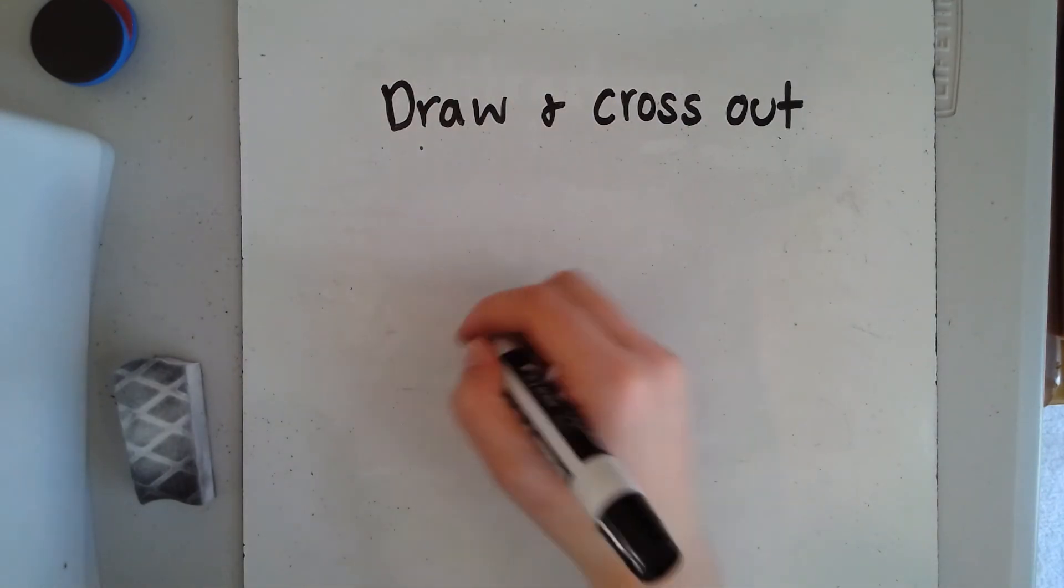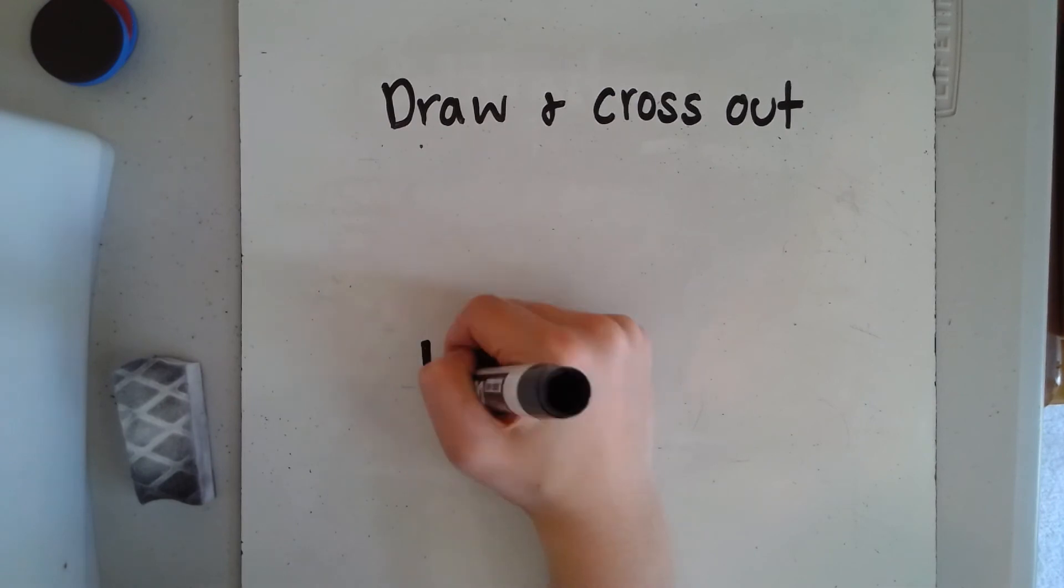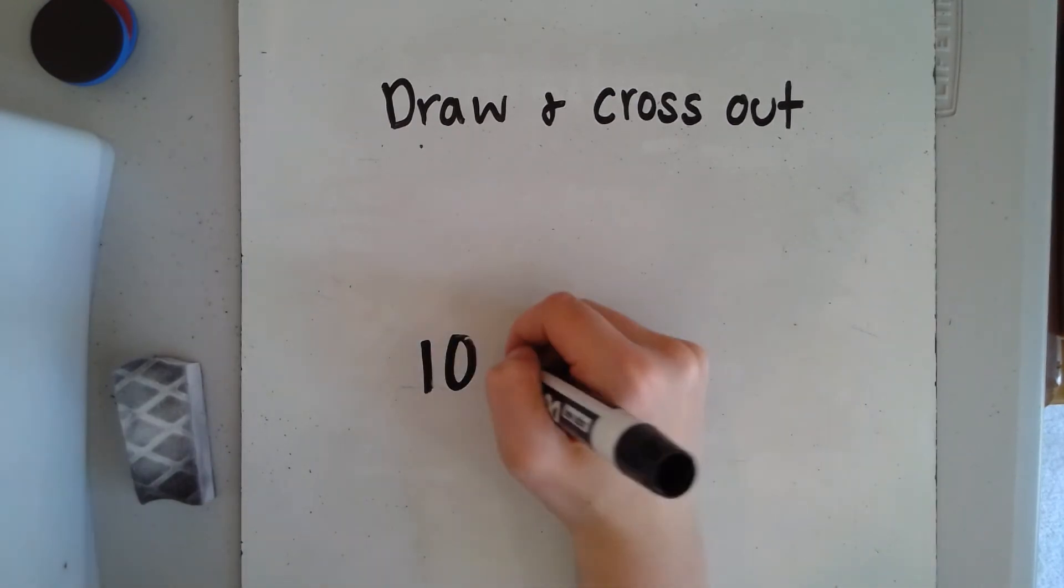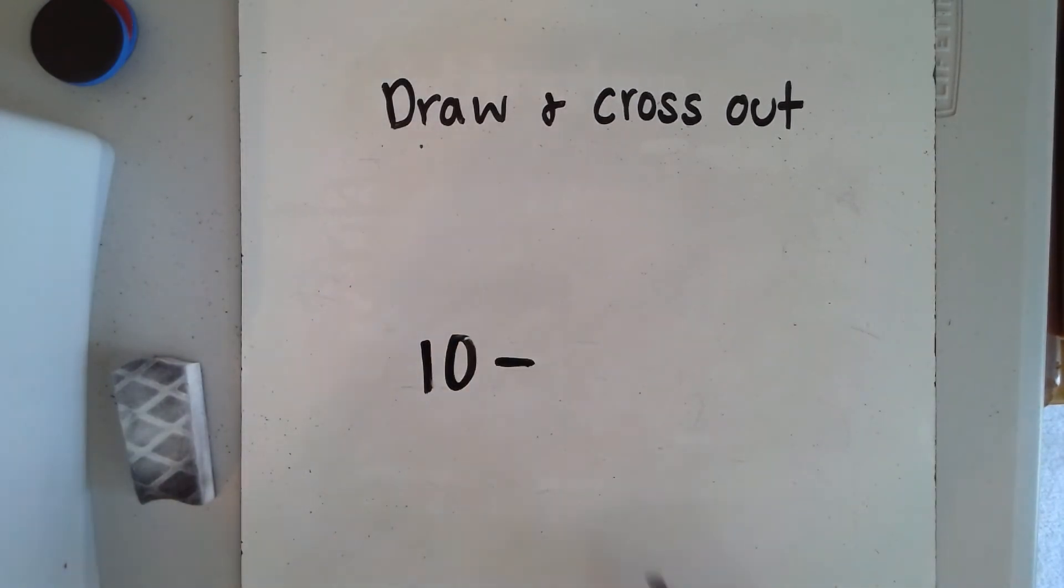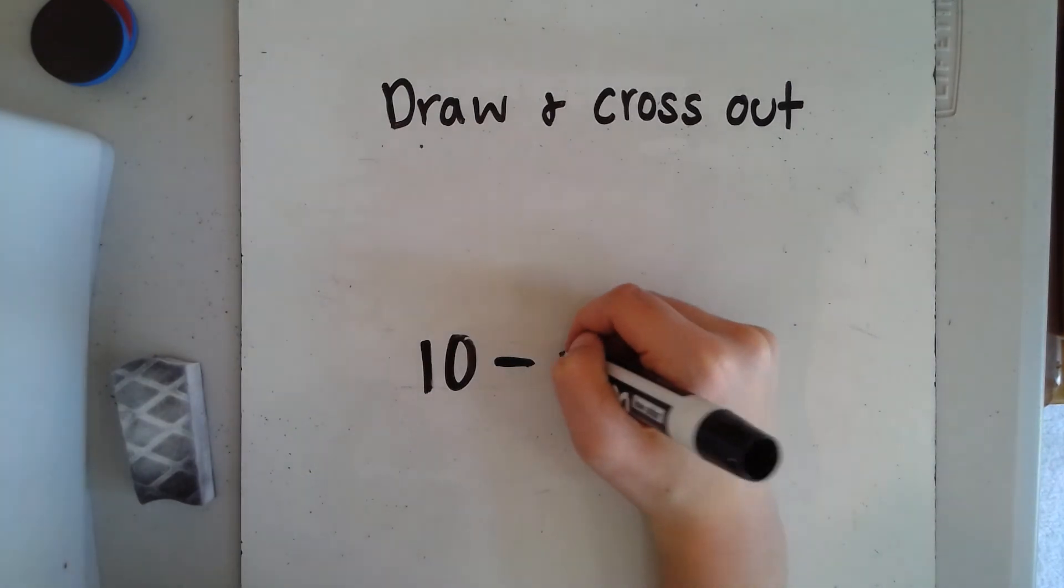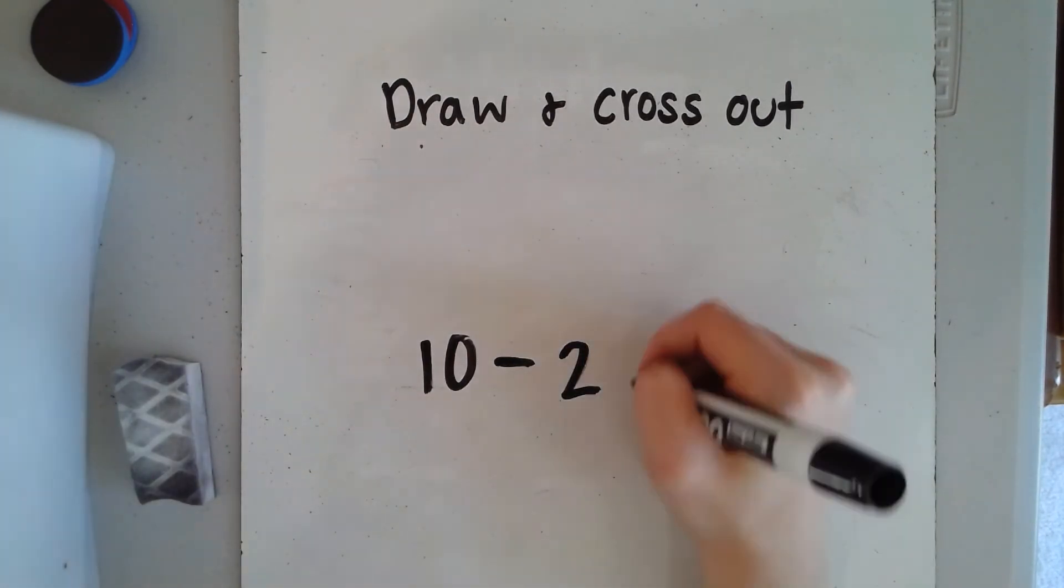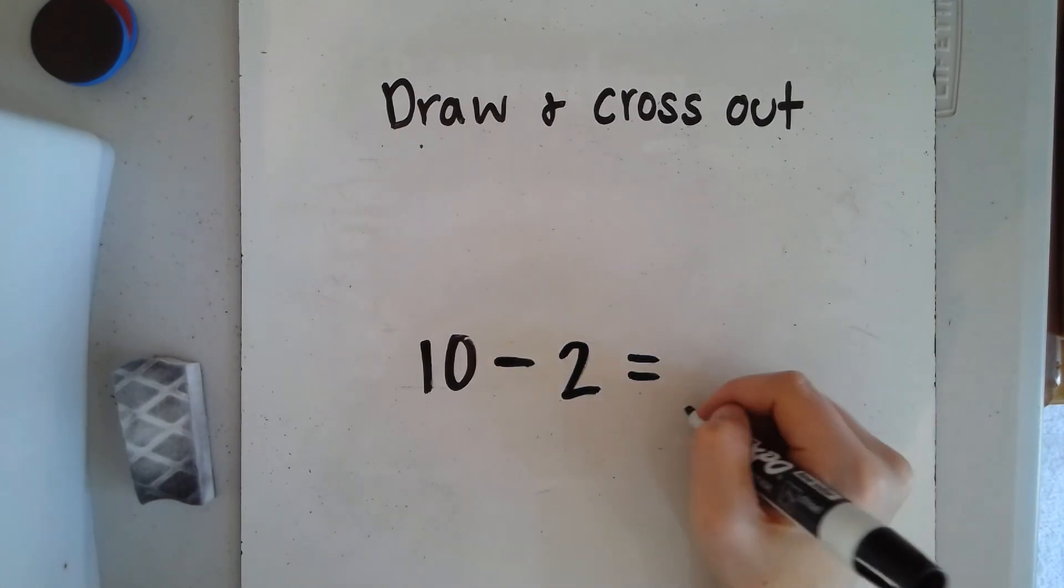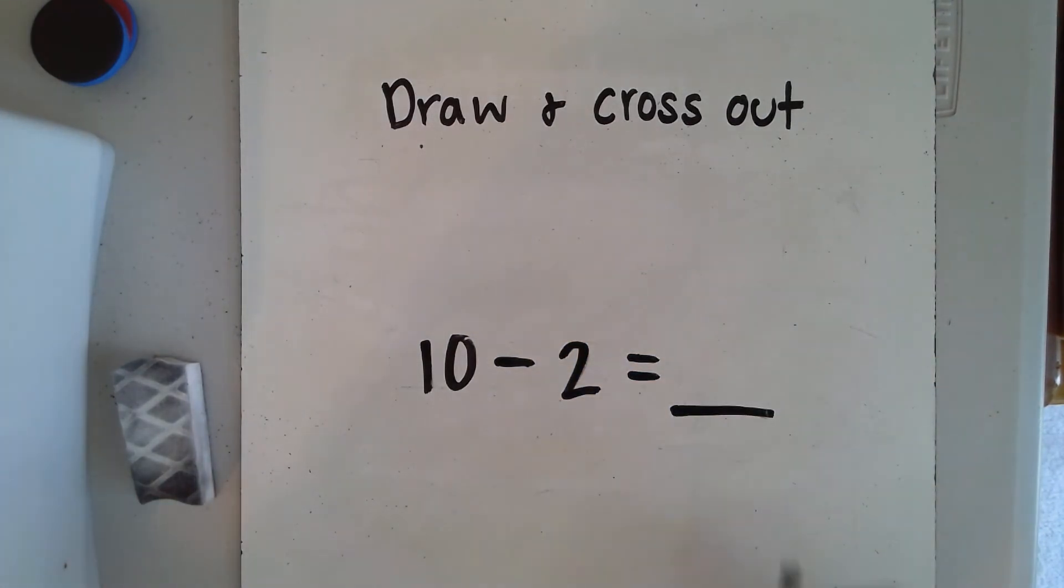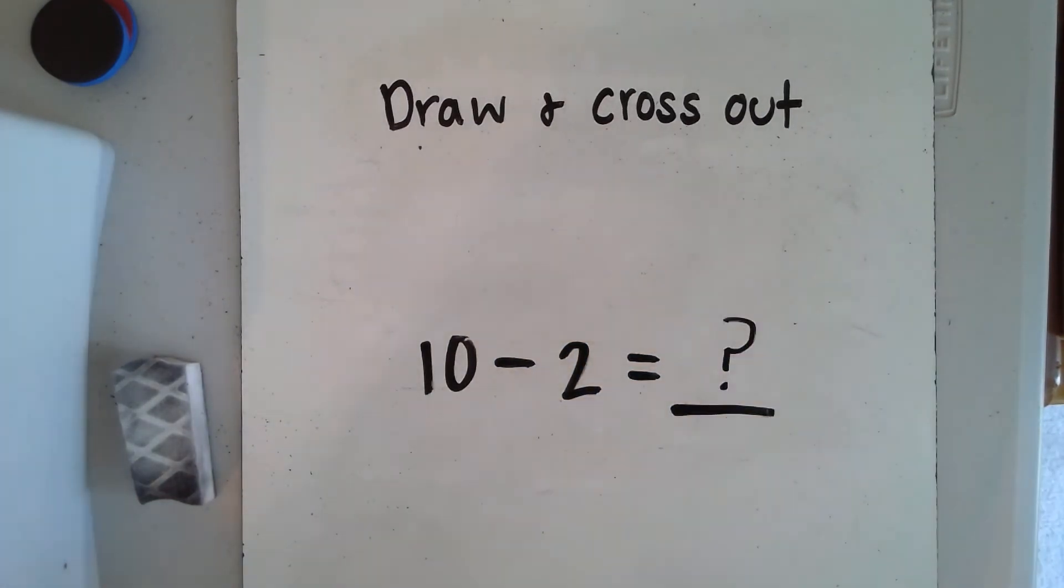Here's your problem: 10 minus, which means take away, 2 equals blank. Can you solve our problem? Remember we start with—I mean, sorry, excuse me—we start with 10, take away 2. What is our answer? How many do we have left over or that are not crossed out?